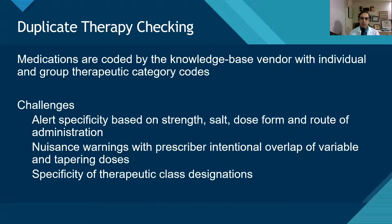Duplicate therapy checking: again, medications are coded, and these tend to be very problematic because you get too many alerts. In a lot of systems, users will actually request that duplicate therapy checking be turned off. There are a lot of challenges with alert specificity, and the prescriber gets a lot of nuisance warnings, so it's really tough to implement this type of duplicate therapy checking properly. Usually we go to custom rules for specific combinations that we feel are the most dangerous.